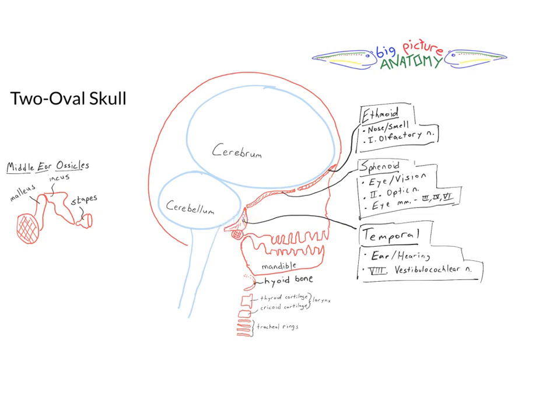So I hope that gives you a nice overview of the skull: that two oval look from the side with the cerebrum and the cerebellum protected by the big rounded plate-like bones of the neurocranium, the big dome of the skull, the face hanging off the front bearing the upper teeth, posteriorly the middle ear cavity with those three tiny middle ear ossicles located behind the eardrum.